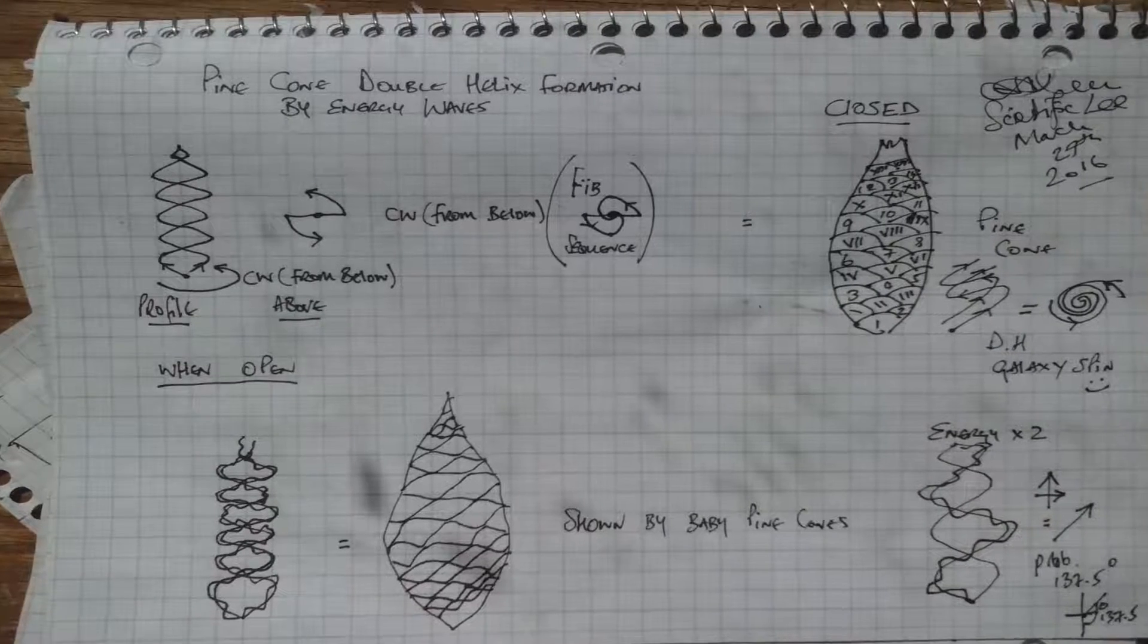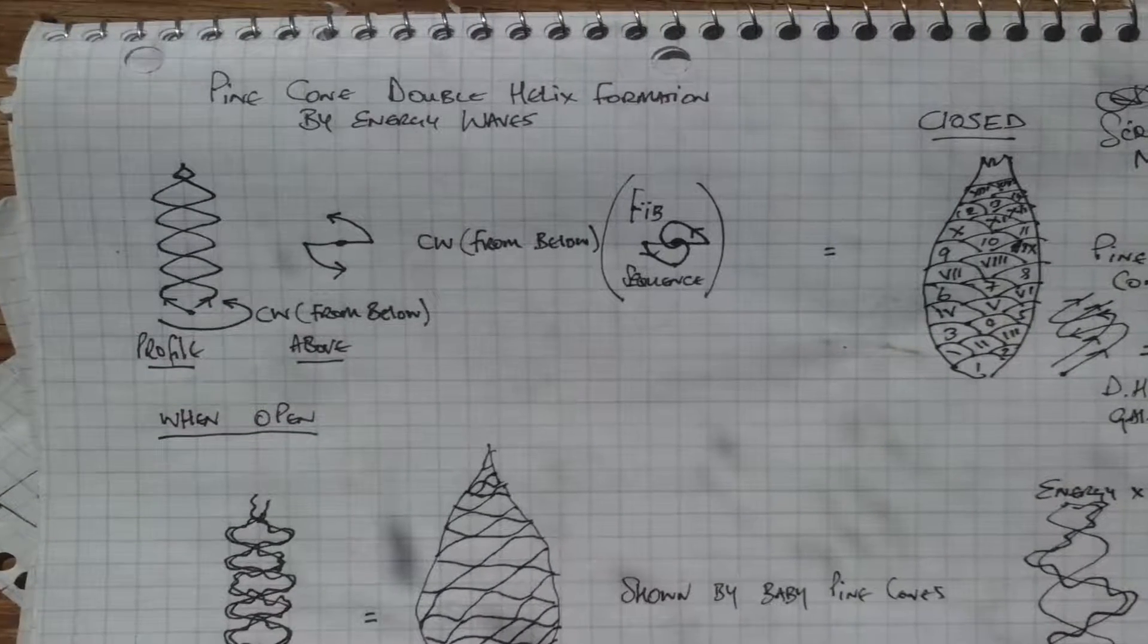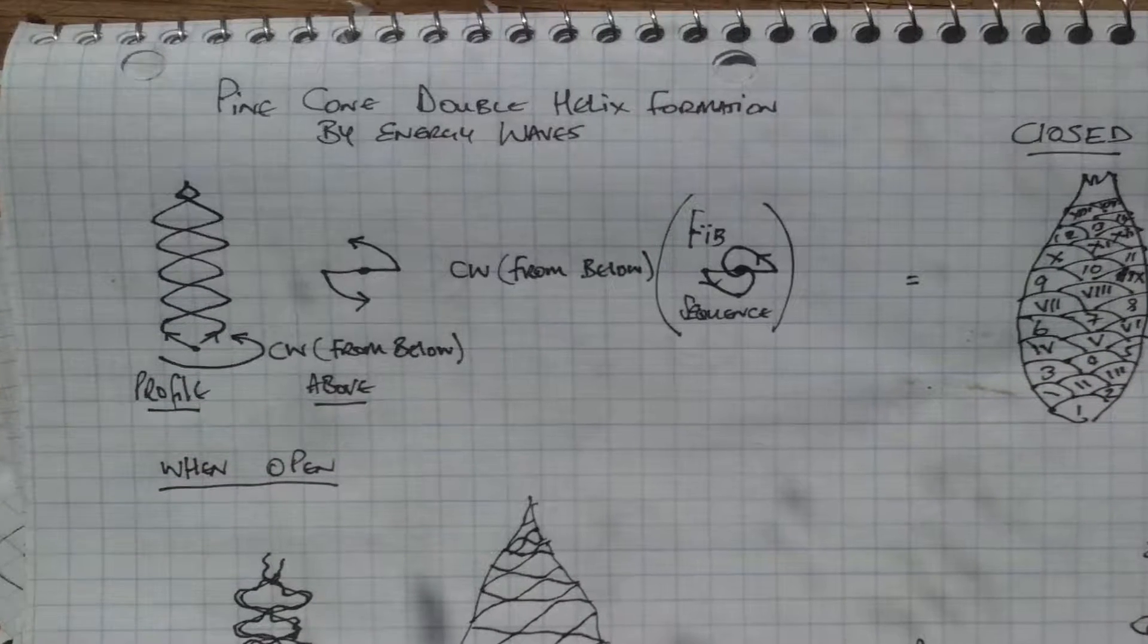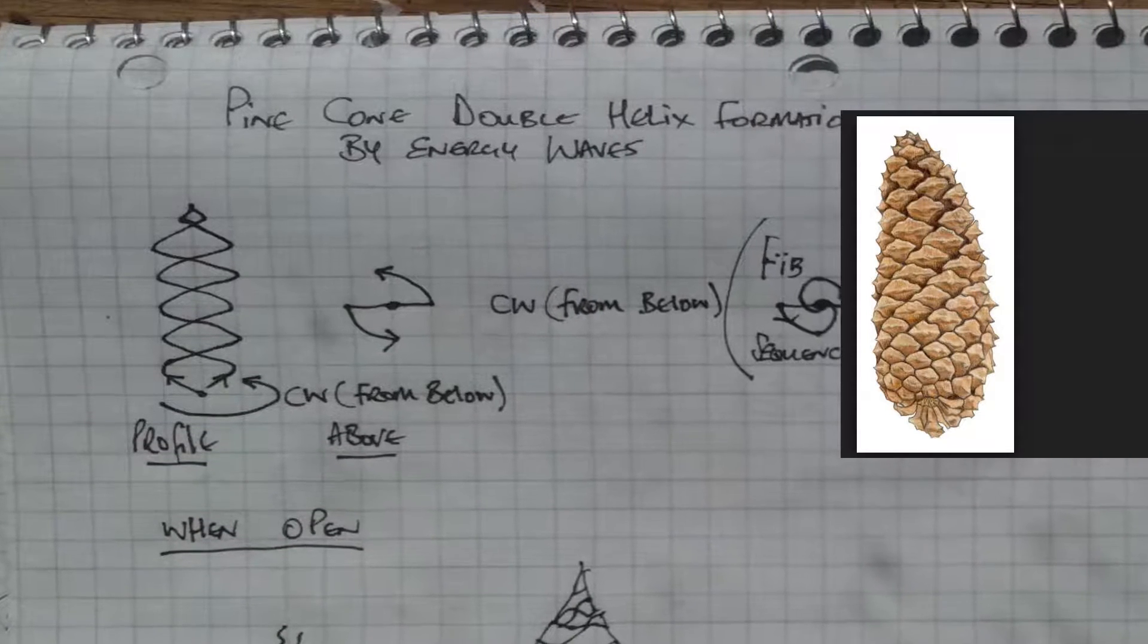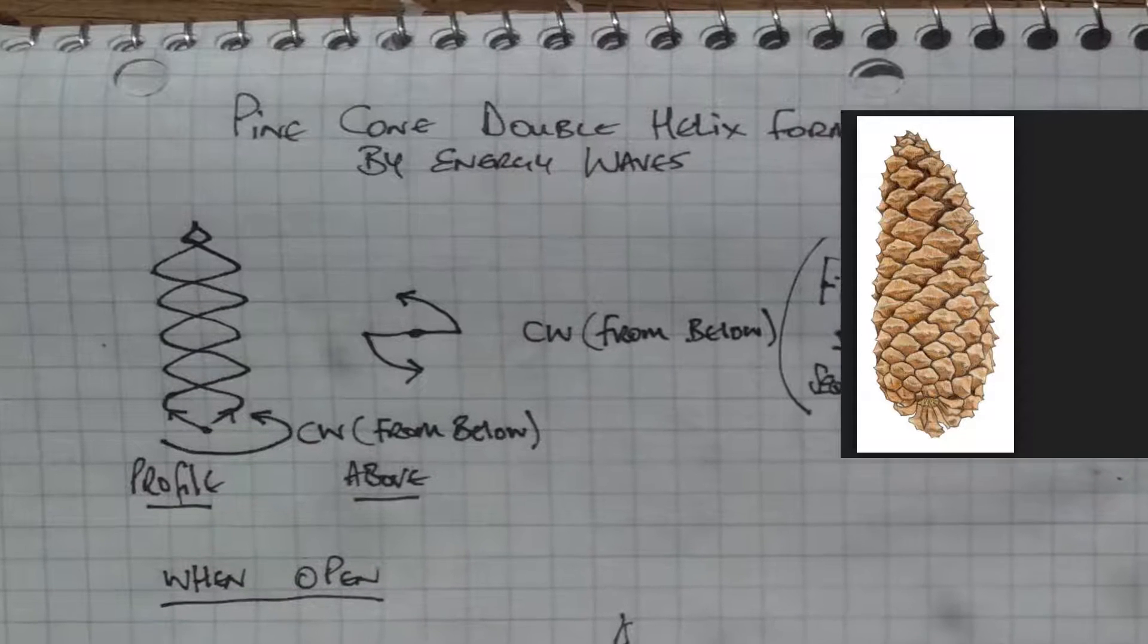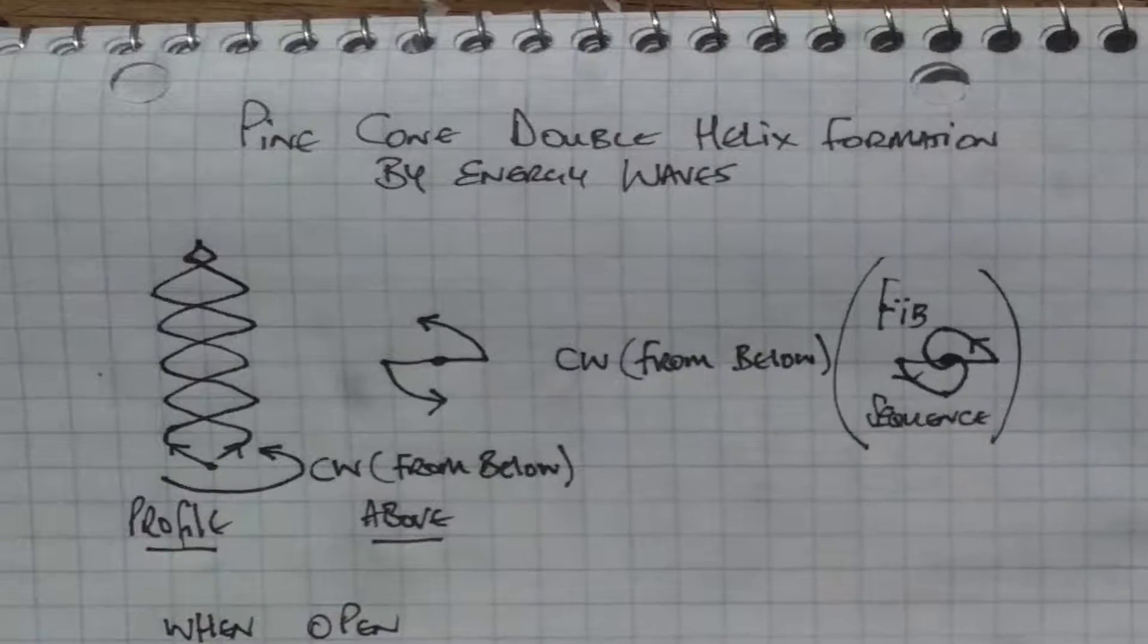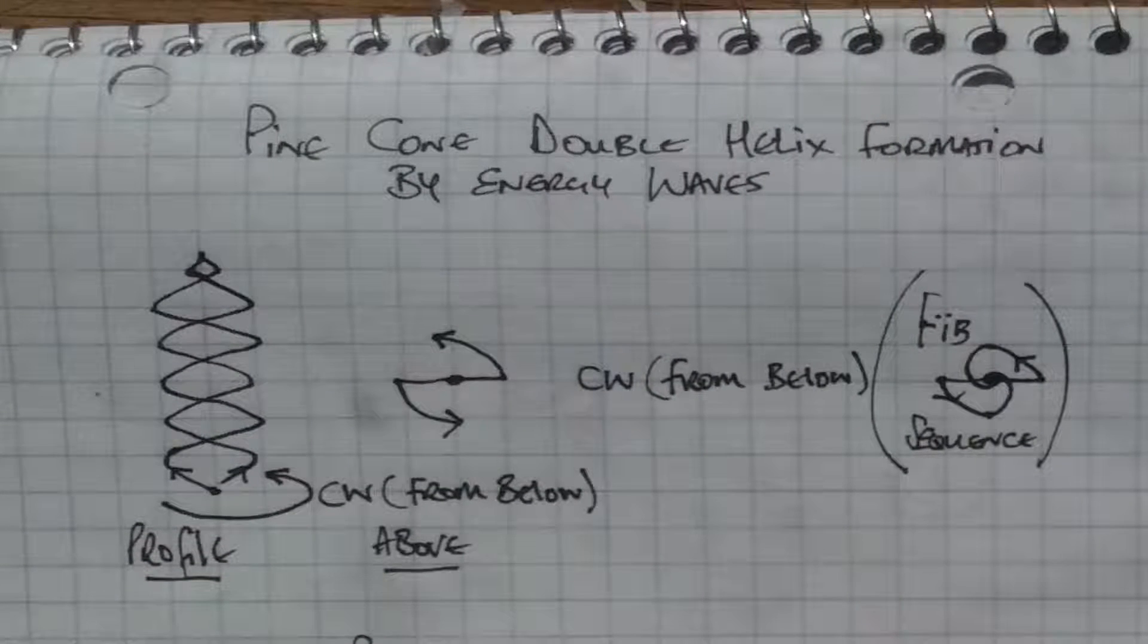So I drew a paper so I can explain what you're looking at. This is it - pine cone double helix formation by energy waves. We've got a profile there and above this is the energy flow. Both of those arrows at the bottom of the profile are traveling clockwise if looked at from below. They rotate around and this is how you get the ability to put in numbers and Roman numerals.